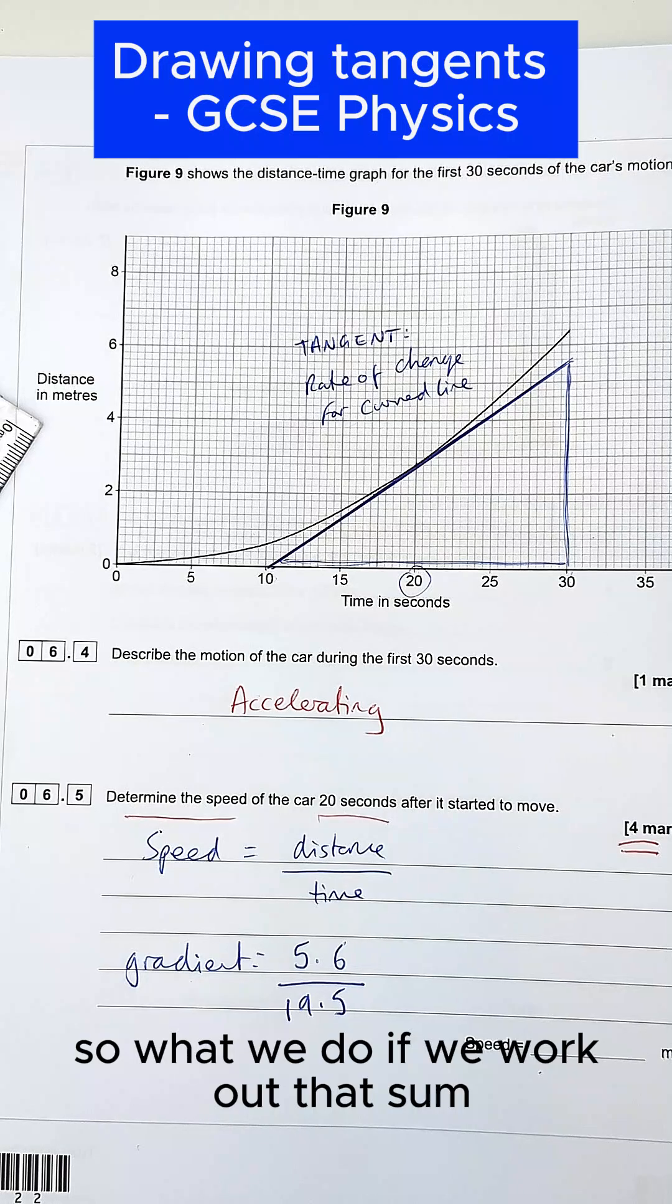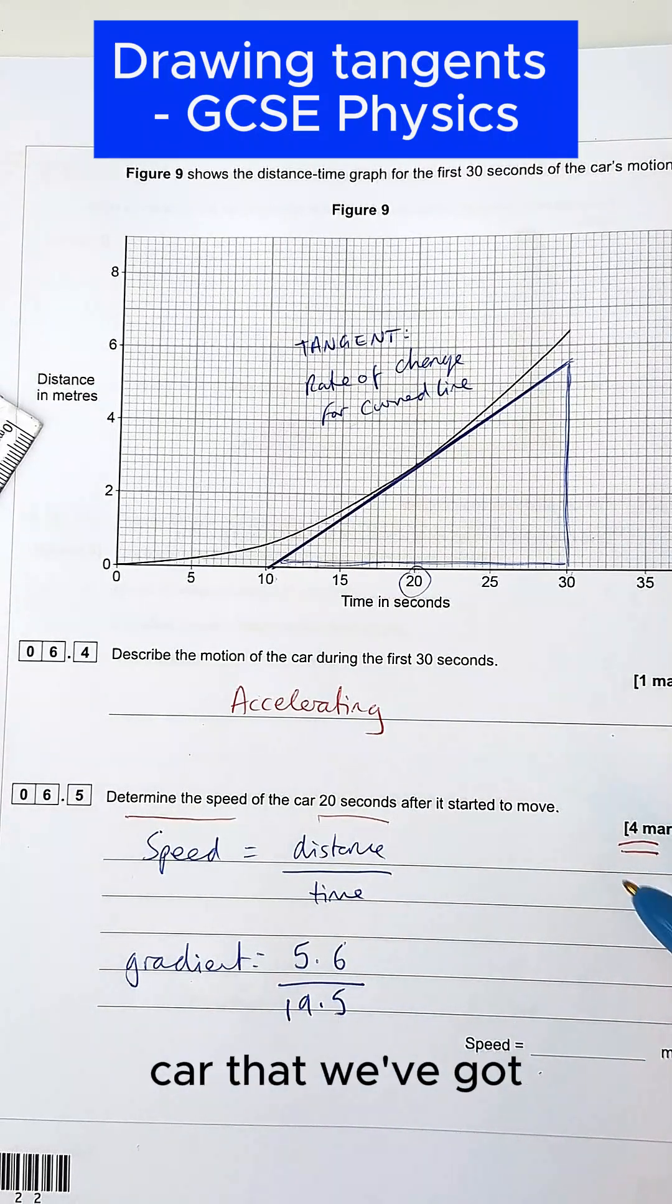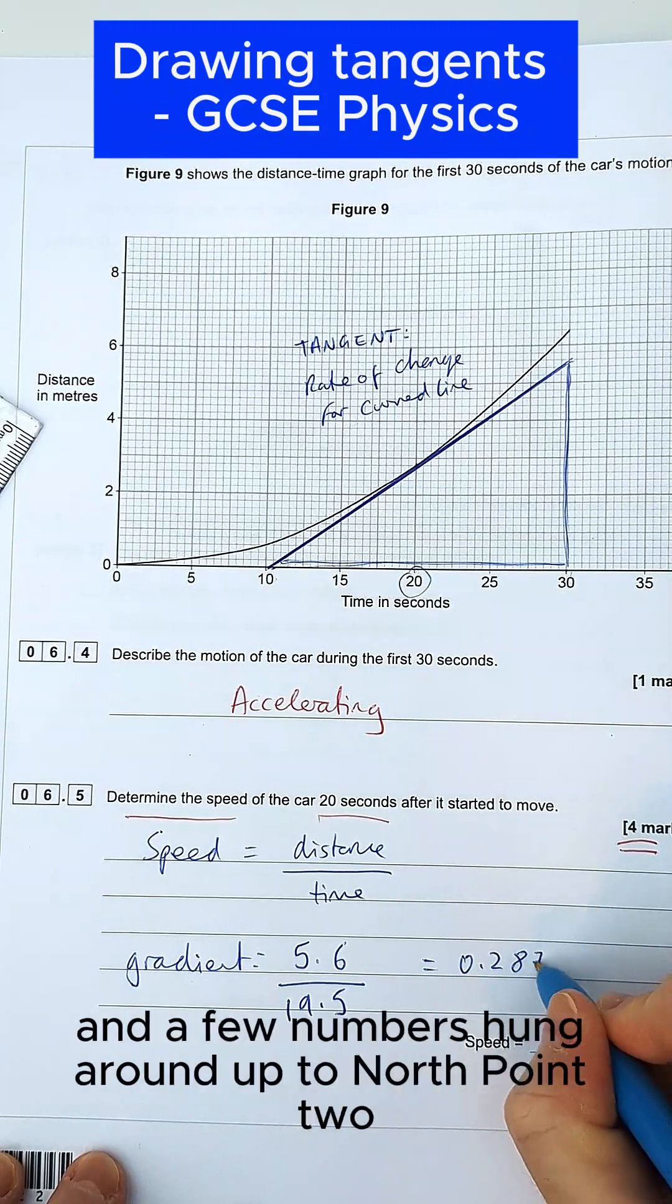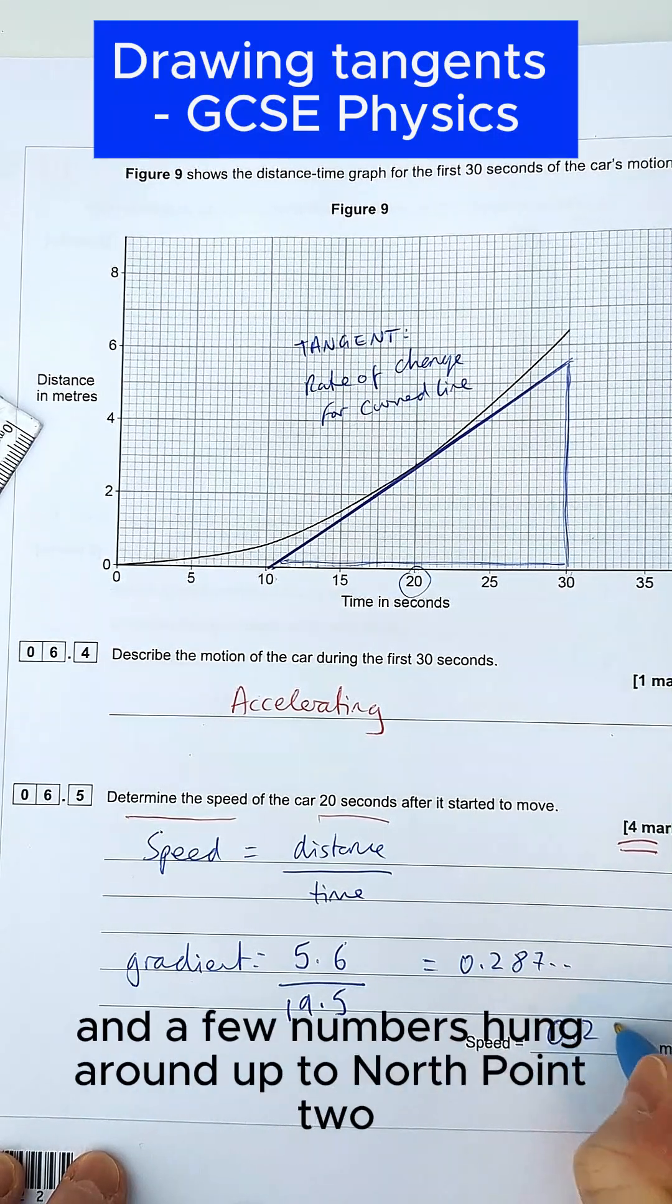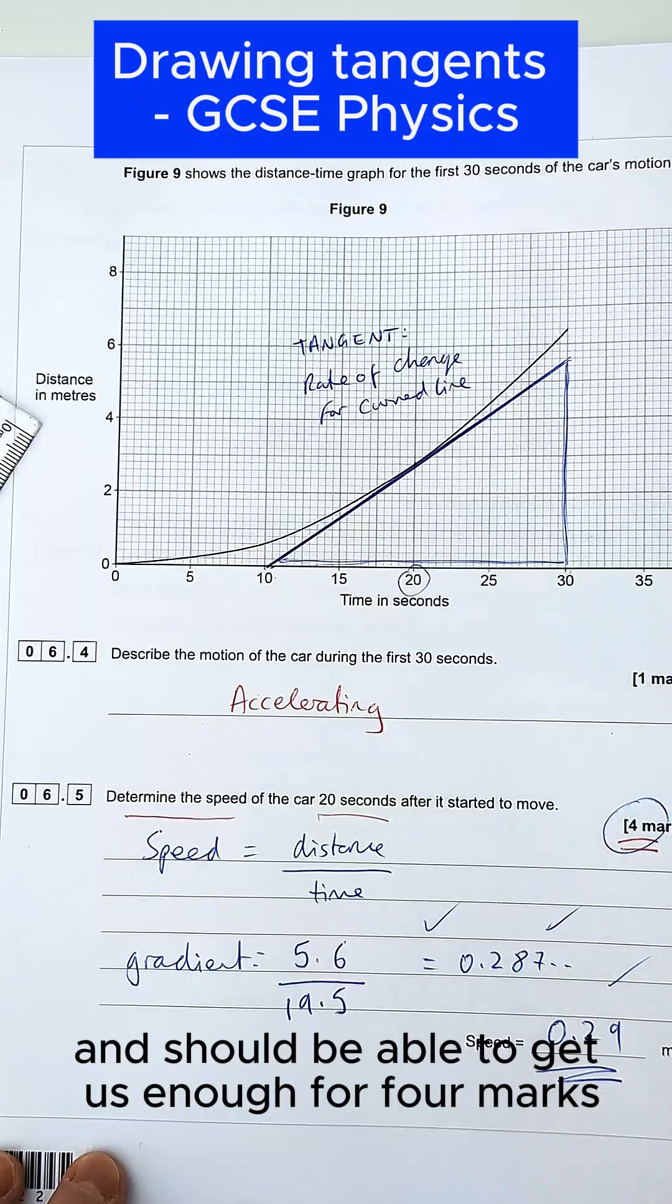So what we do, if we work out that sum then, that should give us the speed overall of the car that we've got. Which is around about 0.287 and a few numbers, I'm going to round up to 0.29, which is within the range for this question and should be able to get us enough for four marks.